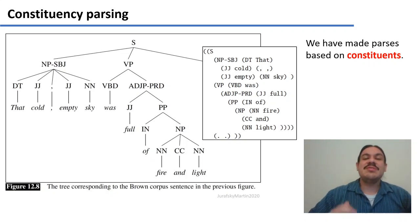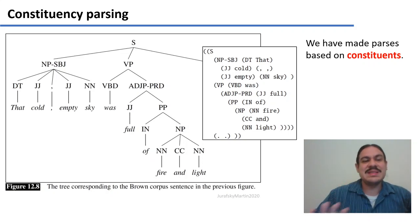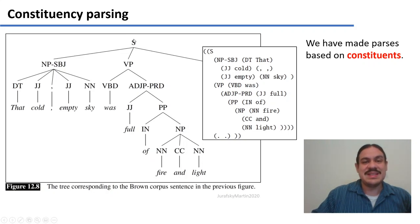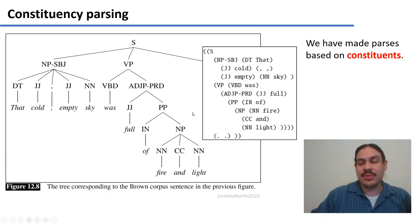We've been making trees based on constituents. For example, we have the sentence 'that cold empty sky was full of fire and light,' and our main organizational units are constituents: sentence, verbal phrase, noun phrase, prepositional phrase, and so forth.